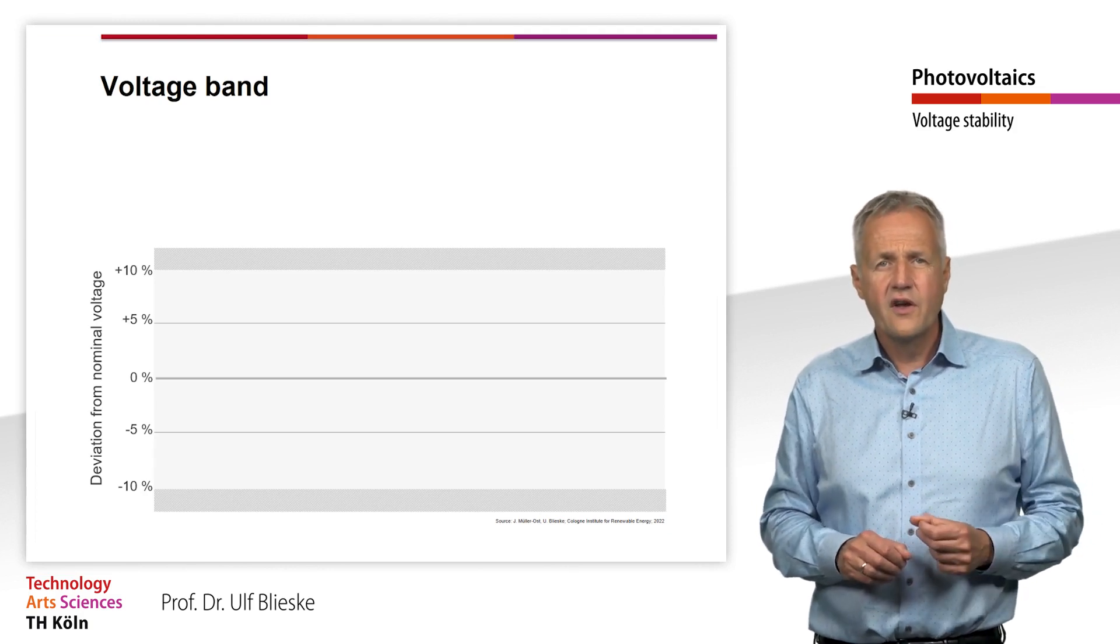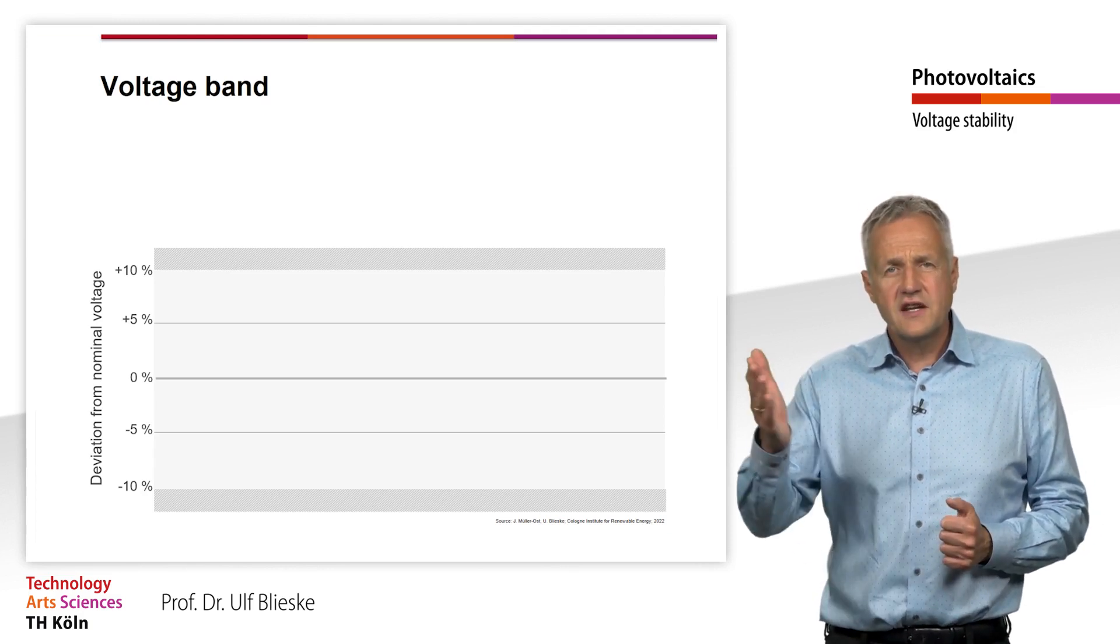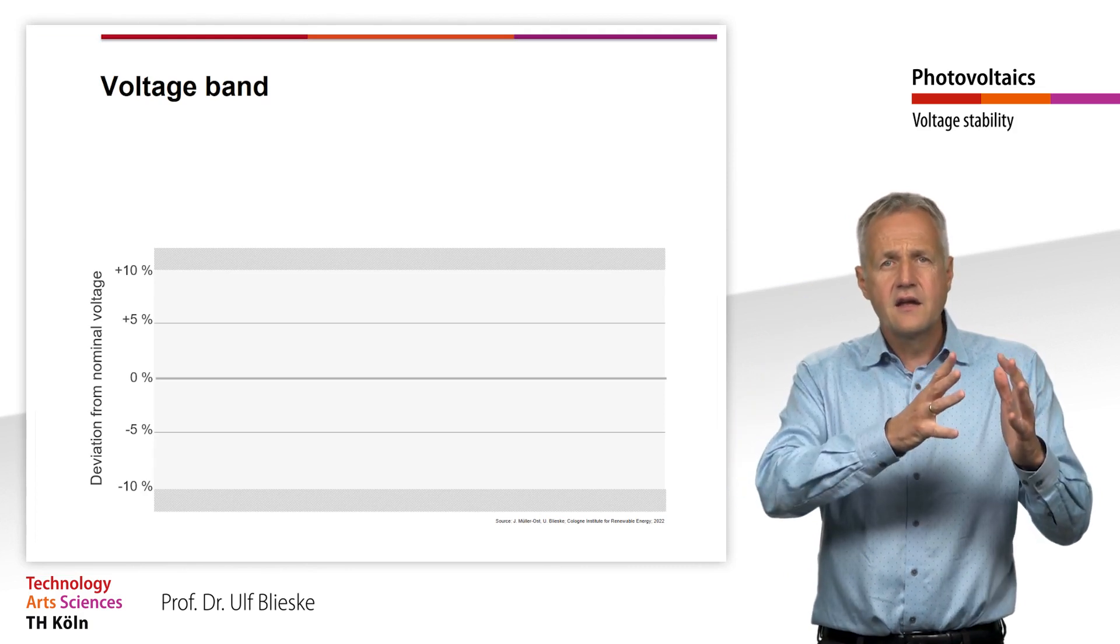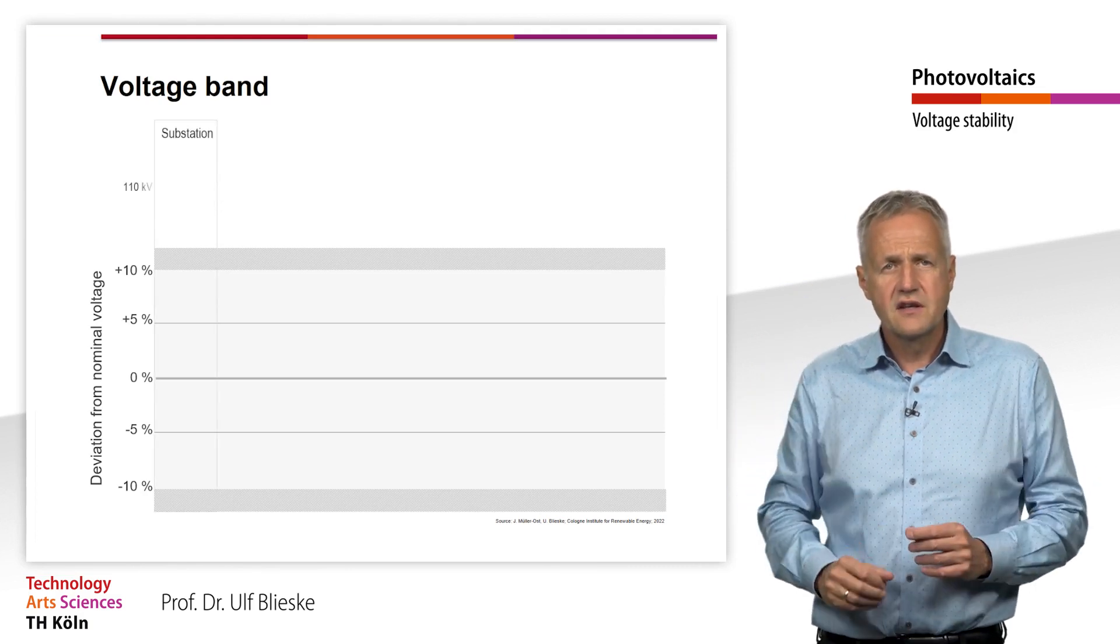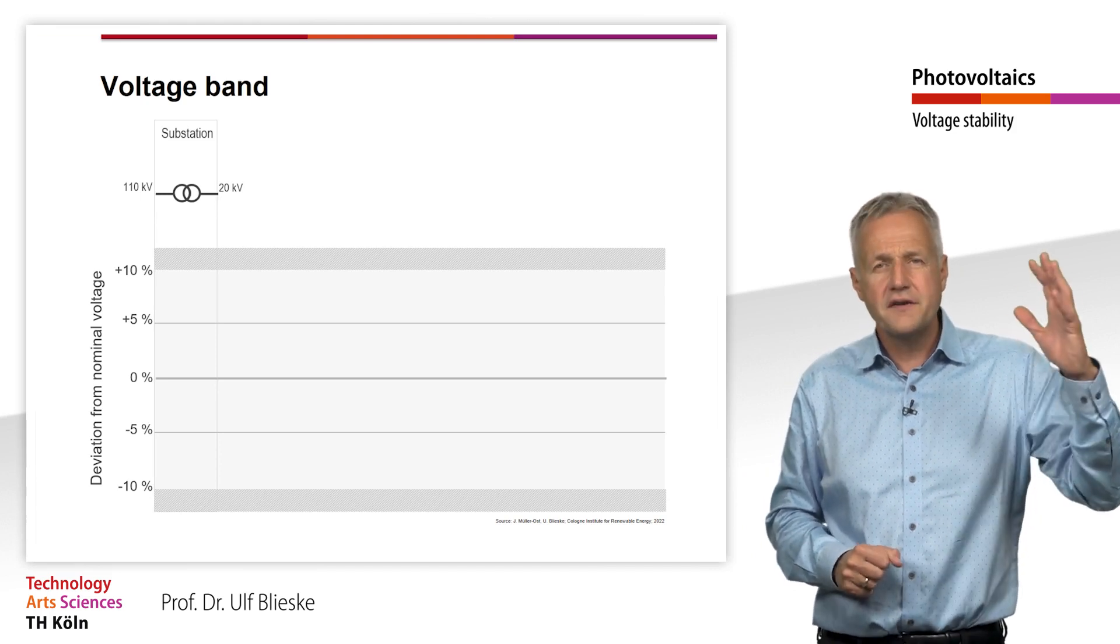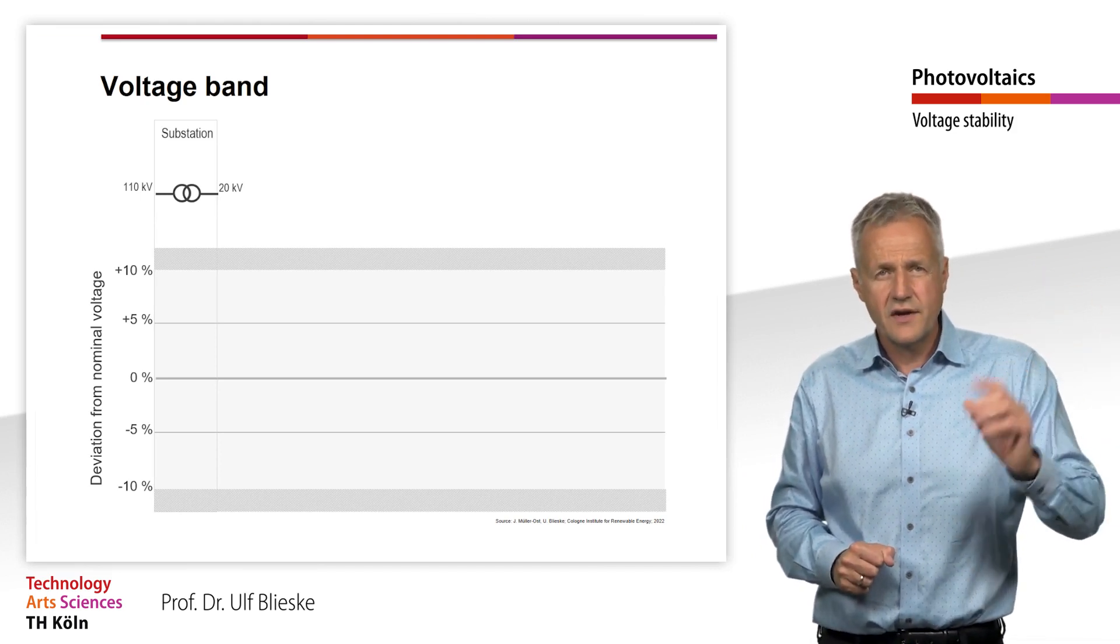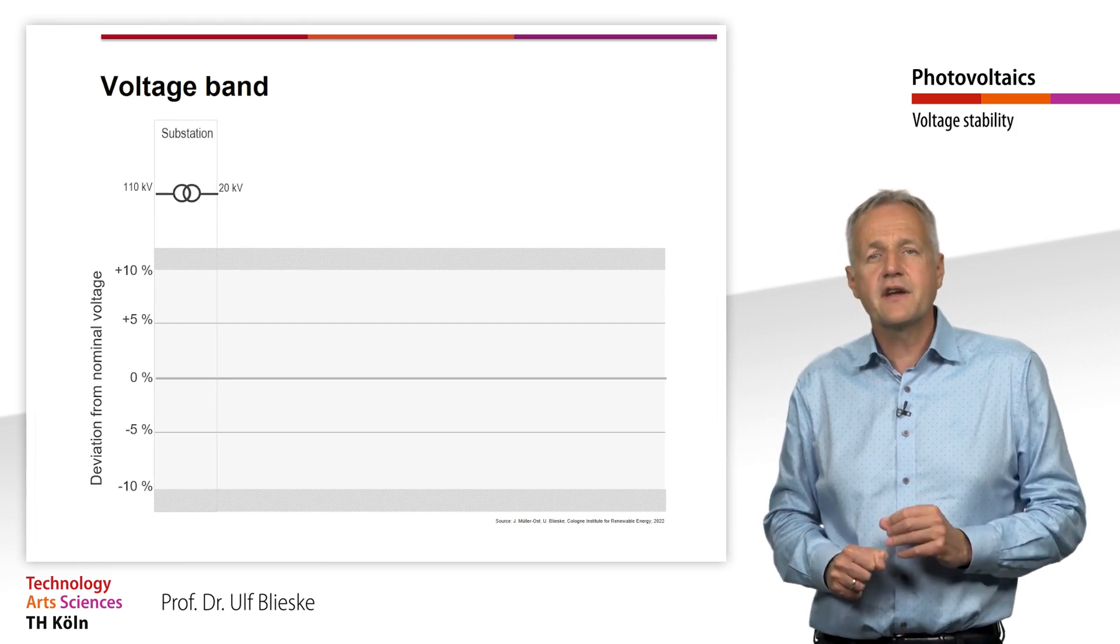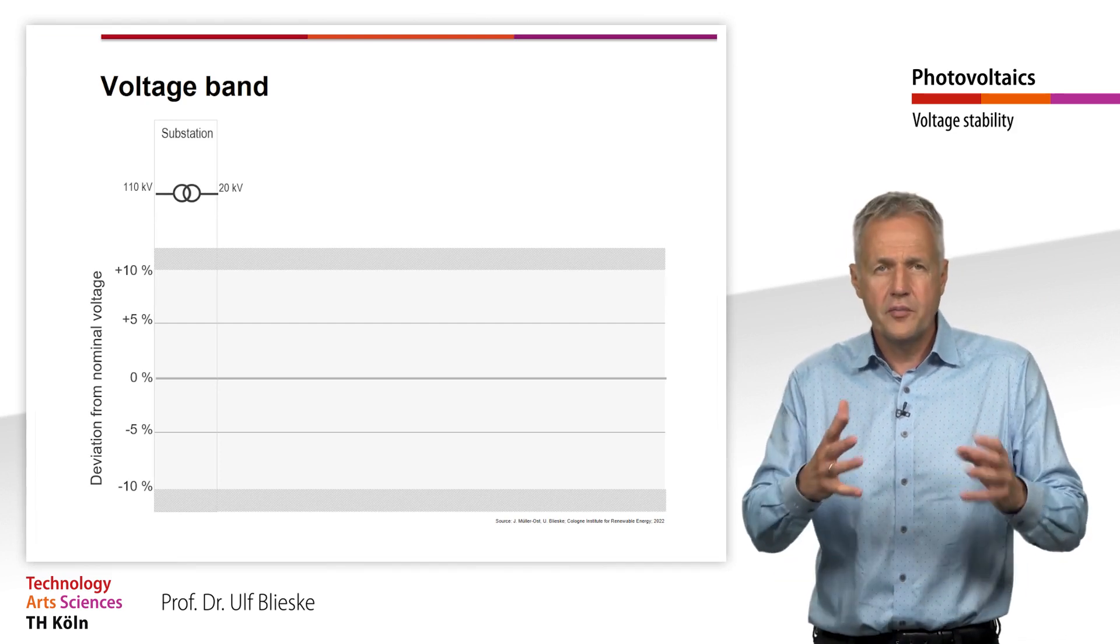First, we have the substation between the high and the medium voltage grid. In the German power grid, the voltage here is transformed from 110 kV to 20 kV in rural areas and 10 kV in urban areas.